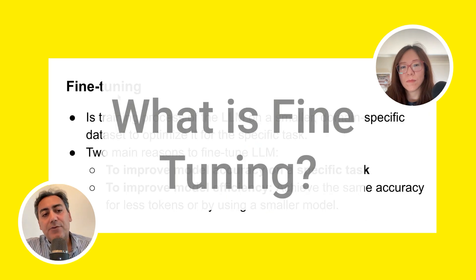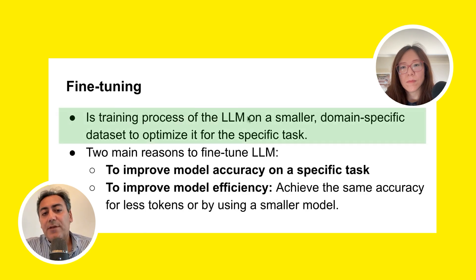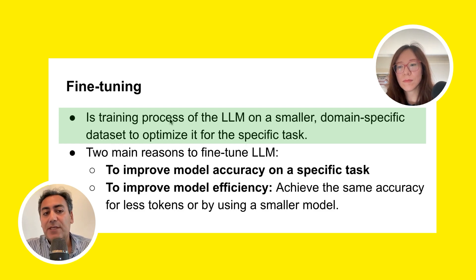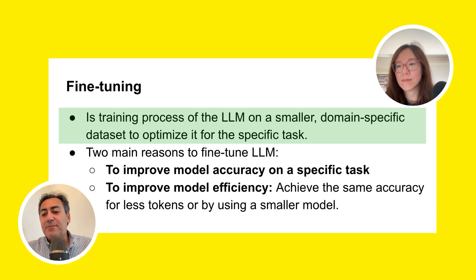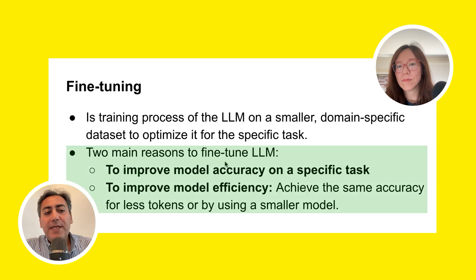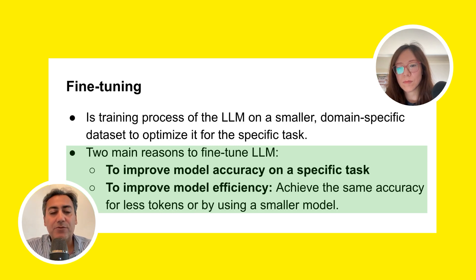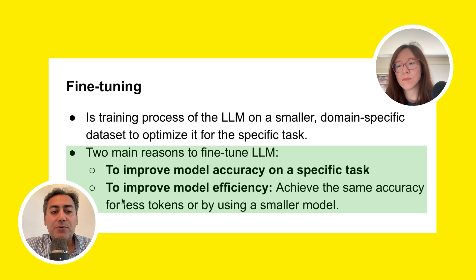So what is fine-tuning? Fine-tuning is the process of training an LLM on a very small, domain-specific dataset to optimize the behavior of the LLM for a particular task. By training, I don't mean we train from scratch — we just teach the LLM an extra skill using that small domain-specific dataset. There are two main reasons to go with fine-tuning: one is to improve accuracy, which is the main reason when other approaches didn't work.